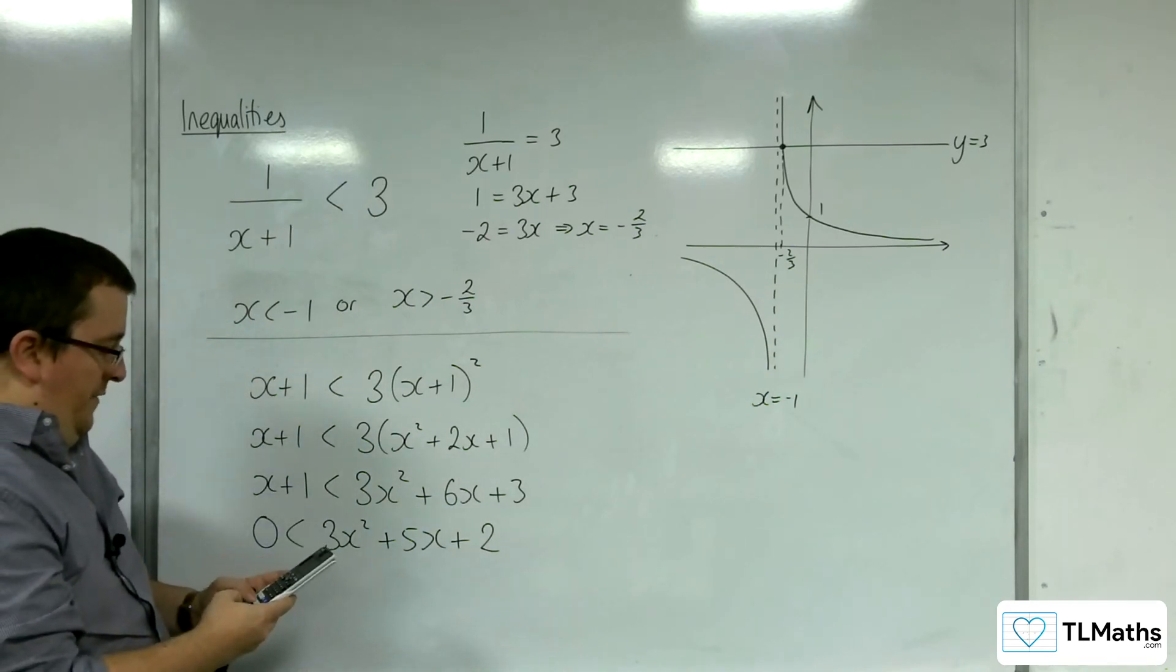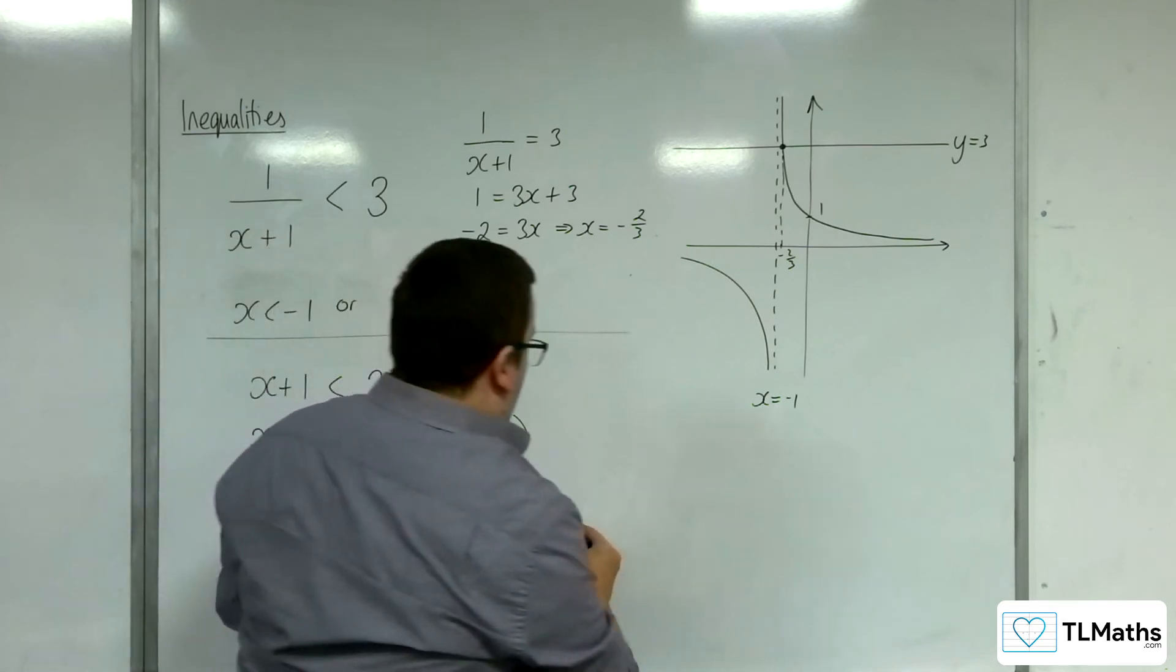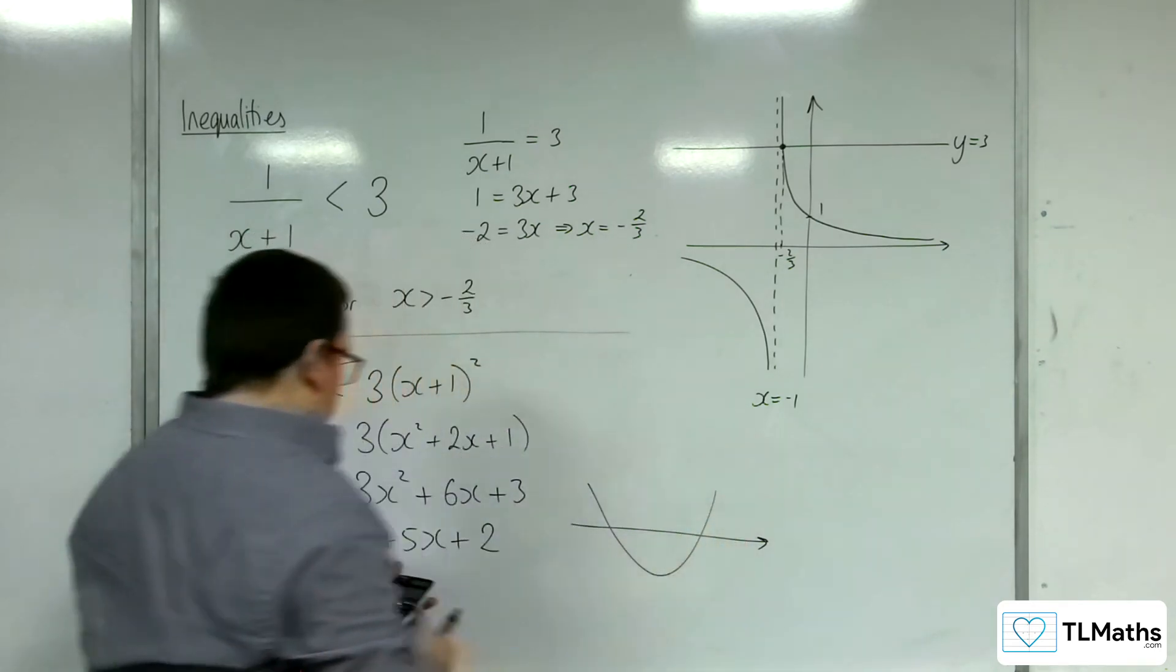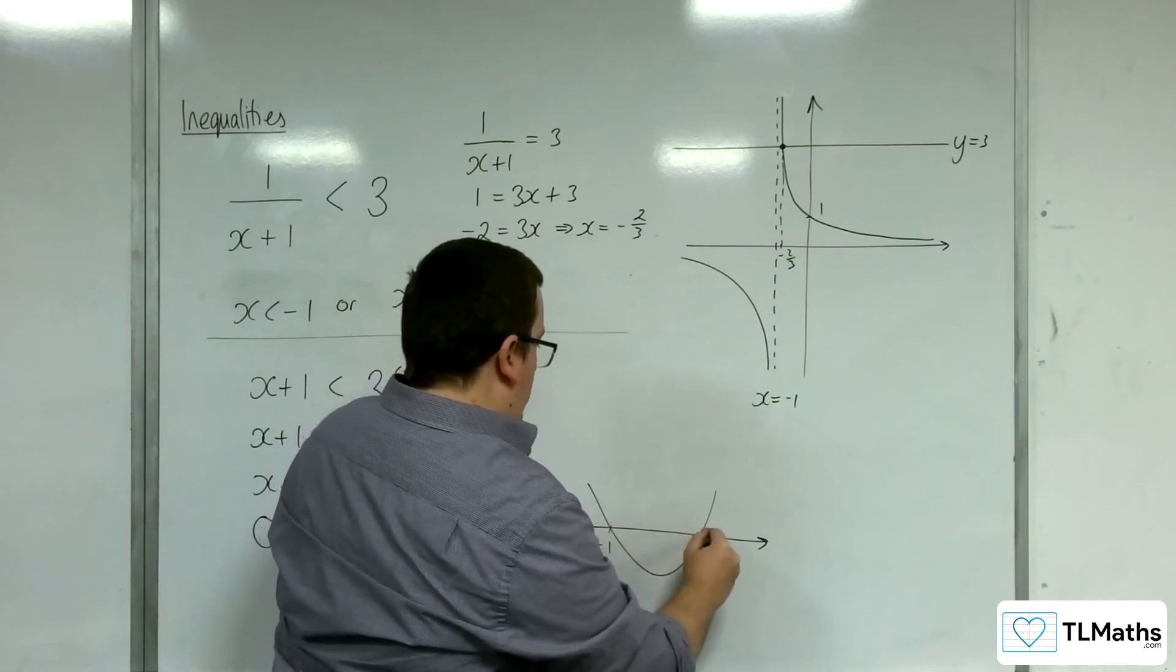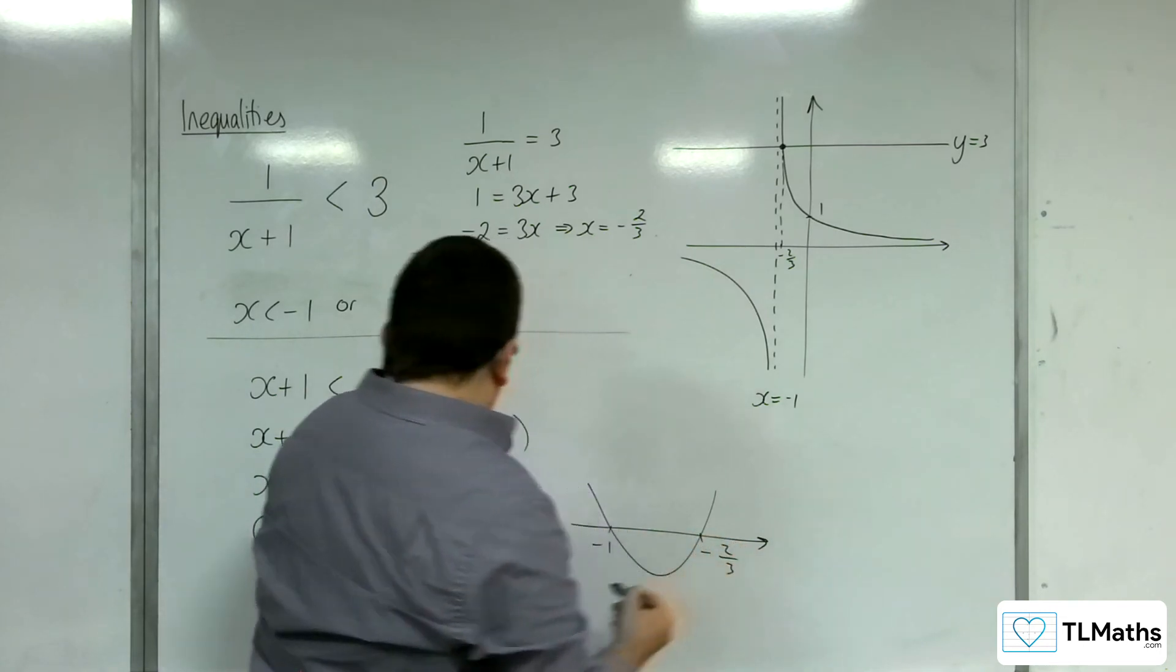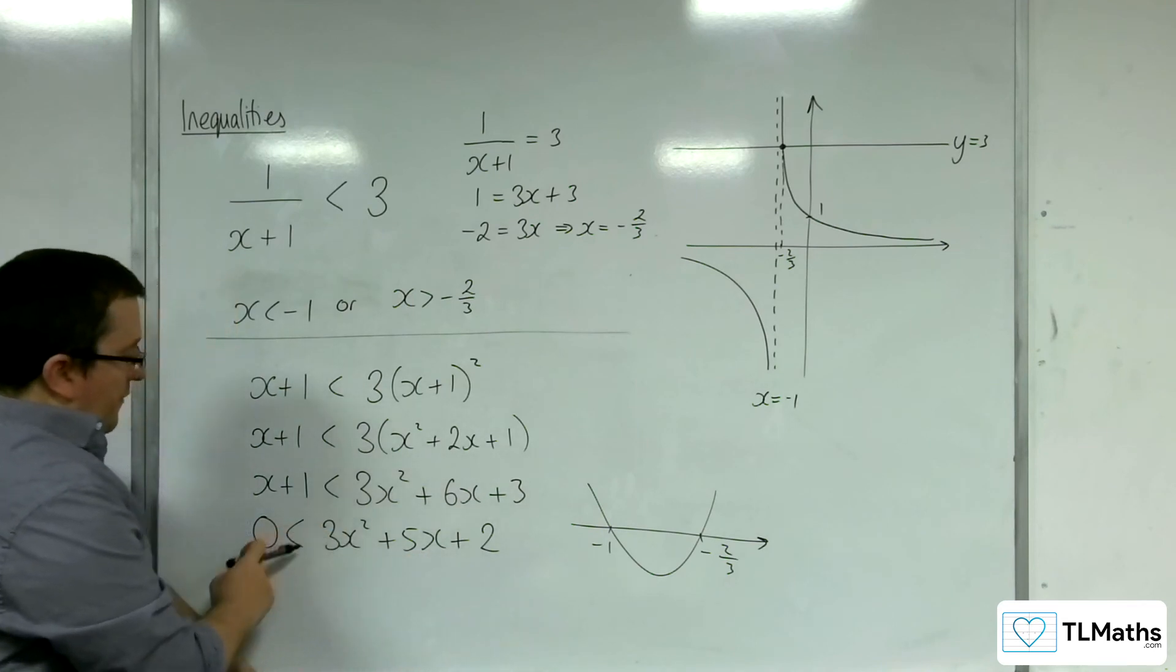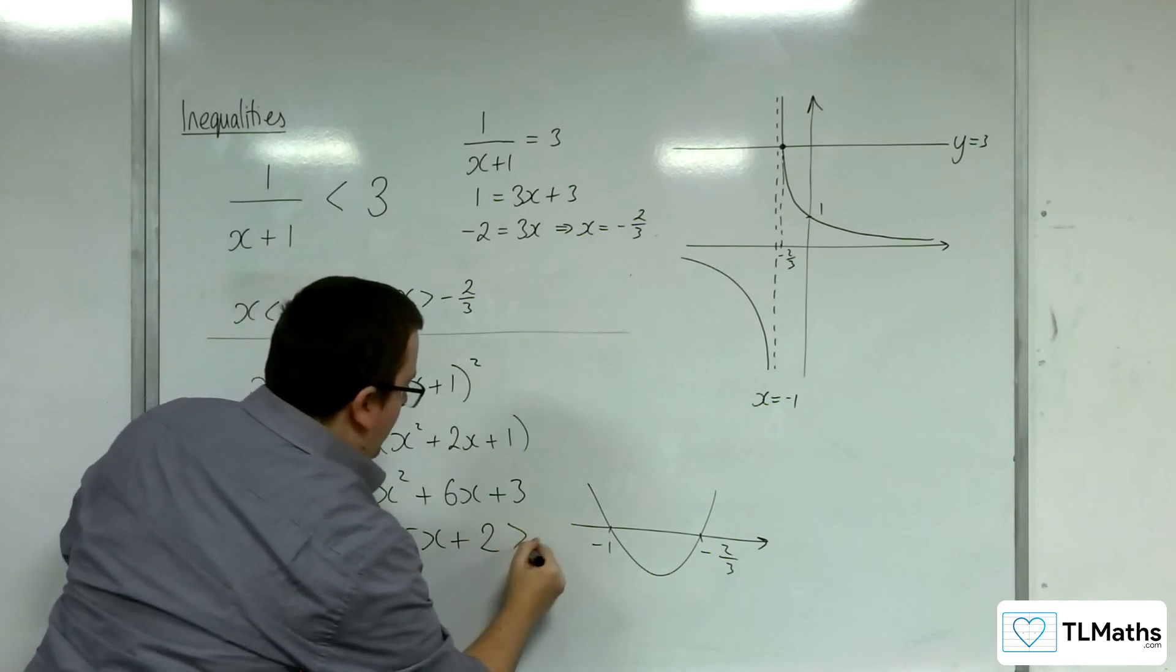So, 3, 5, and 2. And we have a parabola that's going through minus 2 thirds and minus 1. So, minus 1 and minus 2 thirds. And it's asking, where is the parabola above the x-axis? Because remember, this is the same thing as writing that down.